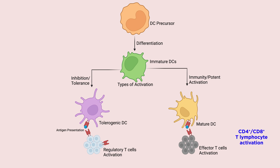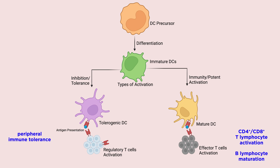Activation of adaptive immunity includes induction of CD4+ T and CD8+ T lymphocyte activation, as well as B-lymphocyte maturation. In contrast, inhibition of adaptive immunity results in peripheral immune tolerance and maintenance of immune homeostasis.